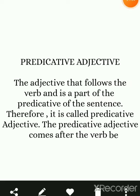Now we will study what are predicative adjectives. The adjective that follows the verb and is a part of the predicate of the sentence is called a predicative adjective. Adjective jo ek verb ko follow karte hain aur jo ek sentence mein predicative paya jata hai, usse predicative adjective kehte hain. The predicative adjective comes after the b-verbs like was, for, has, have, is, are.